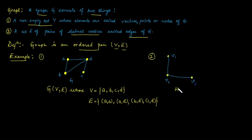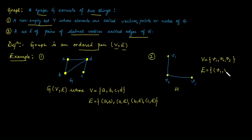Similarly, for the second graph H, its vertex set consists of three elements: V1, V2, and V3. There are only two edges. The edge set is written as: the first edge between vertices V1 and V2, written as the ordered pair (V1, V2), and the second edge between vertices V1 and V3. So this is the edge set for graph H, and we can also represent H as having vertex set V1 and edge set E1.